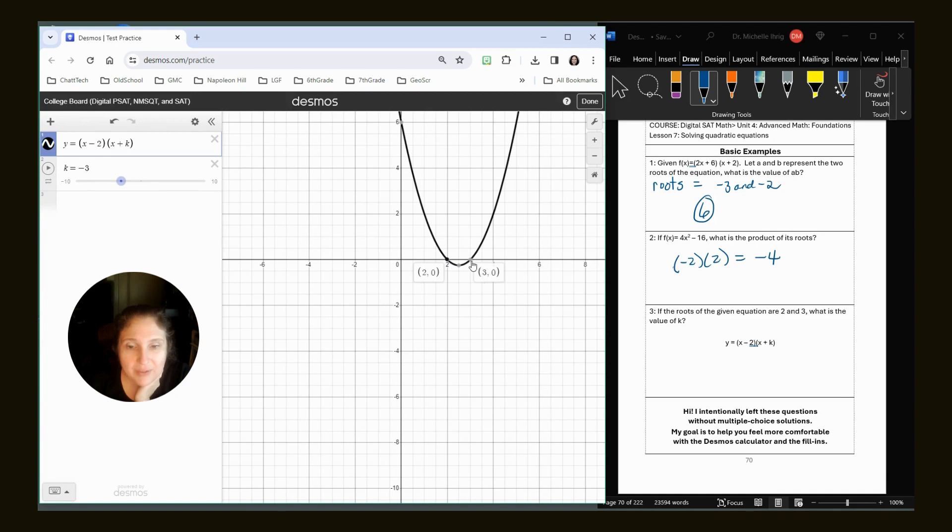Okay. And so now my roots are two and three. So what is my K value? Negative three.